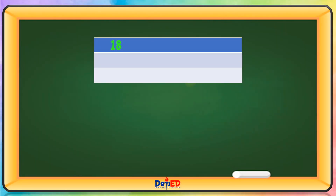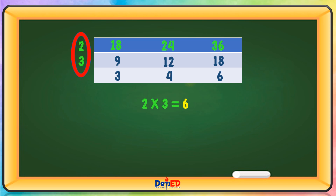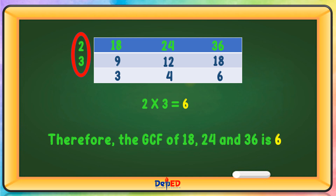Next: 18, 24, 36. Using prime number 2: 18 divided by 2 equals 9, 24 divided by 2 equals 12, 36 divided by 2 equals 18. Now using prime number 3: 9 divided by 3 equals 3, 12 divided by 3 equals 4, 18 divided by 3 equals 6. Multiply the prime numbers: 2 times 3 equals 6. Therefore, the GCF of 18, 24, and 36 is 6.